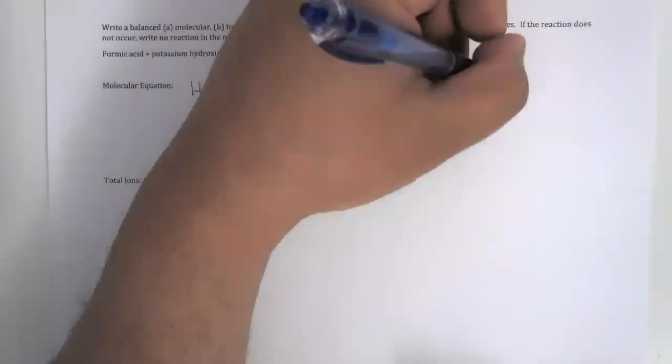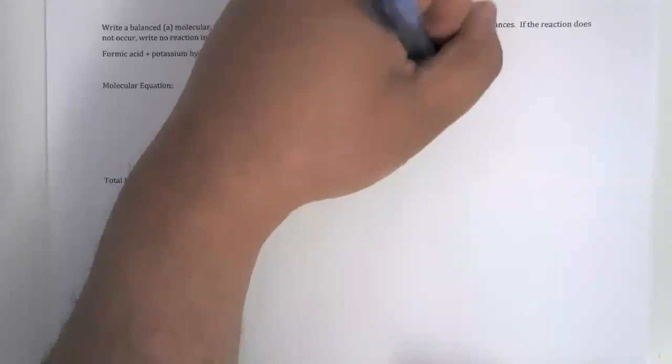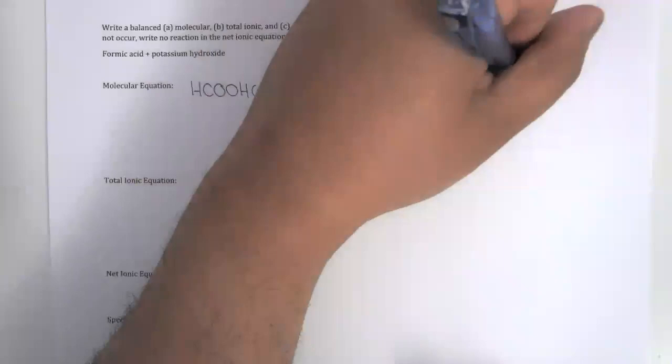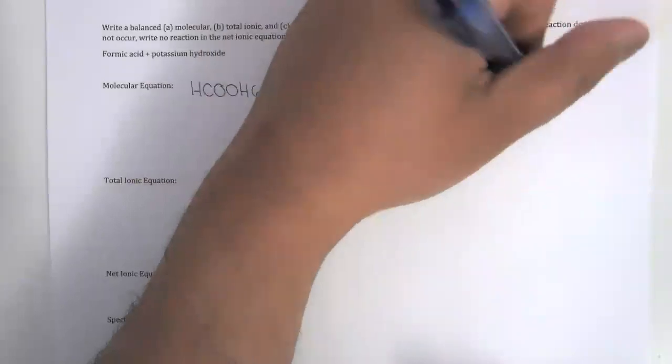And the other product, a salt, in the form of potassium formate, or KCOOH. The equation is balanced.